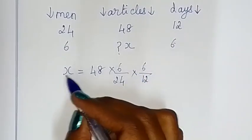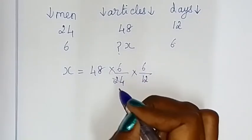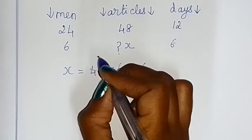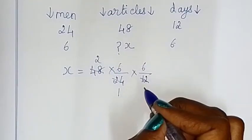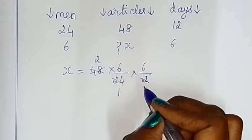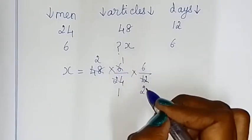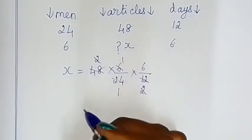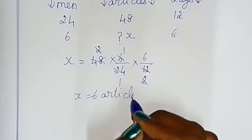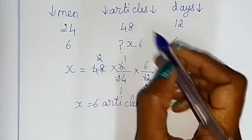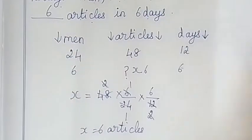Simplify: number of articles, number of days. The calculation gives 6. So here 6 articles — 6 men can make 6 articles in 6 days.